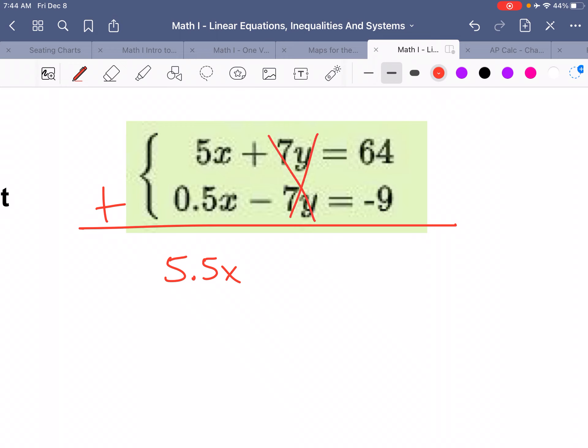And I'm left with 5.5x is equal to 55. 64 plus negative 9. Which means that x equals 11. No, it doesn't. x equals 10.